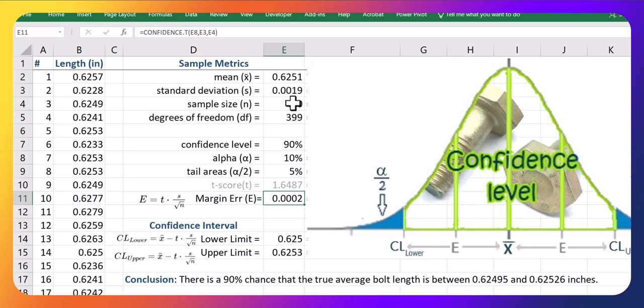And that also gives us our margin of error, which we then go and add and subtract from our mean to get our lower and upper bounds for our confidence interval. So that's all the same as before. You just take your sample mean, subtract your error to get your lower limit. Sample mean plus your error gets your upper limit. And that gives you your bounds here for your confidence interval, which gives you the range that your true average length will be between.